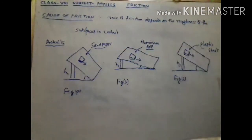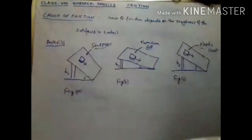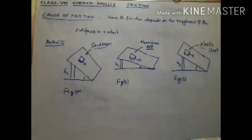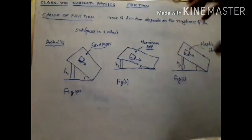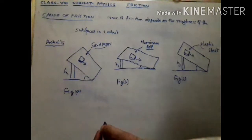What caused the roughness? When we say the cause of friction, we ask: what causes roughness? Roughness means the irregularities present on a surface.